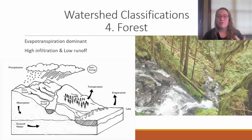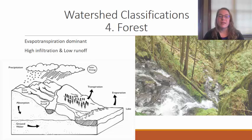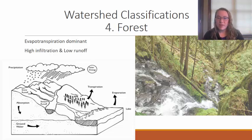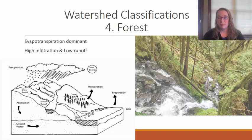The next type is forest watersheds. These have high levels of evapotranspiration from all the vegetation, and forest soils tend to have high levels of infiltration because of all the root structures that allow water to slowly seep into the soil. Because of this stabilization from roots and high infiltration, forest watersheds tend to have low levels of runoff and erosion. However, when humans clear cut parts of the forest, these disturbances can have some pretty significant impacts.